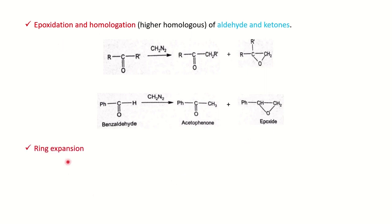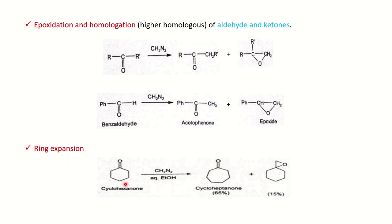Another application is ring expansion. If you have a cyclic ketone, you can also extend the chain in the presence of diazomethane. Cyclohexanone is converted into cycloheptanone as the major product, along with epoxide formation as a side product.